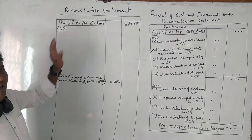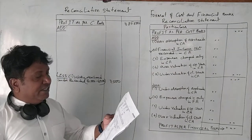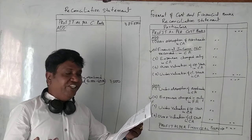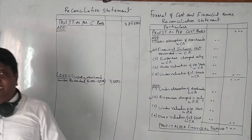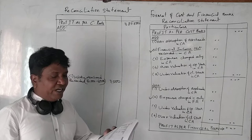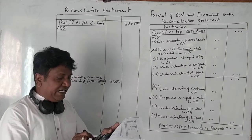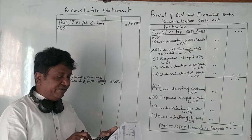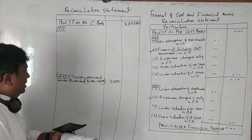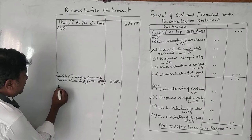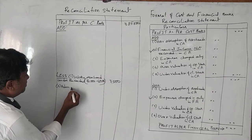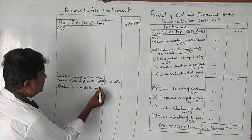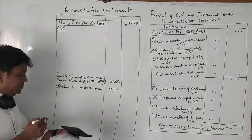Next is administration overhead: 90,750 in cost books, but in financial accounting it is 1,02,650. Again, in cost accounting administration overhead is recorded less. The difference is 1,02,650 minus 90,750 = 9,900. So administration overhead under-recorded: 9,900 rupees to be added.